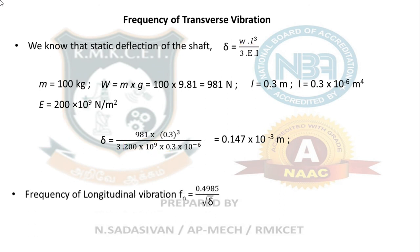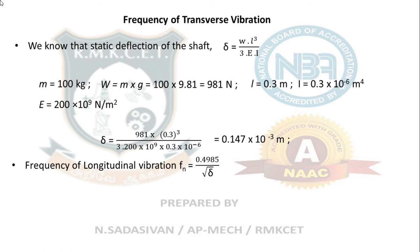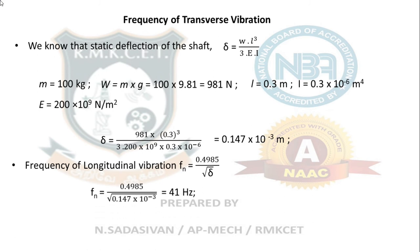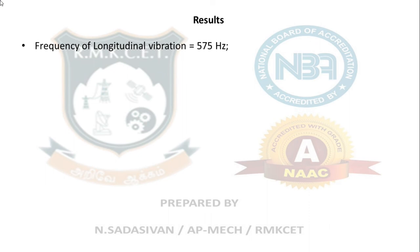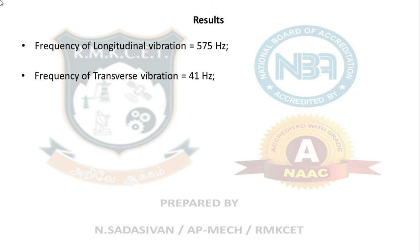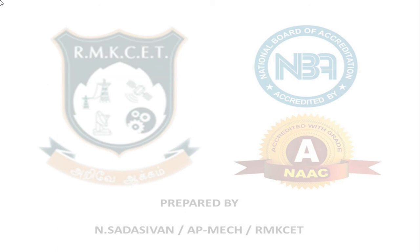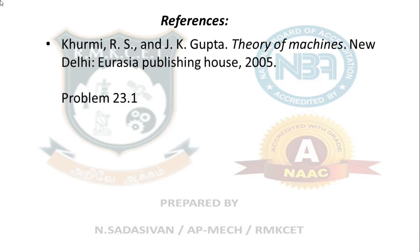Now apply the same natural frequency formula: fn = 0.4985 / √δ. The derivation proves that the same formula applies for both longitudinal and transverse cases. So 0.4985 divided by the root of 0.147 × 10⁻³ gives 41 Hz for transverse vibration. Summary: longitudinal vibration frequency is 575 Hz, transverse vibration frequency is 41 Hz — both are natural frequencies with no damping provided. This is problem 23.1 from your course.